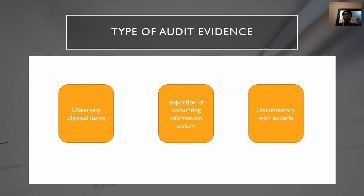First and foremost, observing tangible items. Auditors can physically inspect for the presence of computer terminals, printers, Wi-Fi, etc. The computer center should be visited for visual verification of the presence of water and smoke detectors, fire extinguishers, etc. This is because physical access controls are designed to protect the organization from unauthorized access.